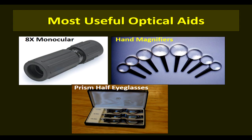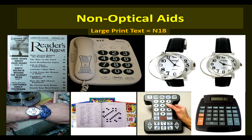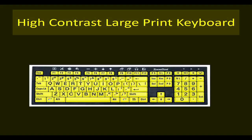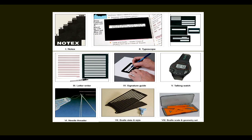The most useful optical aids are the cheap and simple ones. Anyone can start practicing low vision aids with the simplest and cheapest options like monocular telescopes, handheld magnifiers, and prism half eyeglasses. Non-optical aids include bold and larger-size print books, telephone dials, watches, high-contrast large-print keyboards, signature guides, and talking watches.